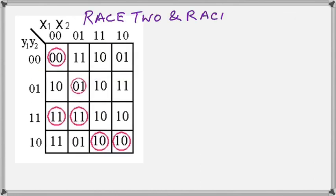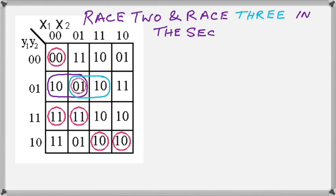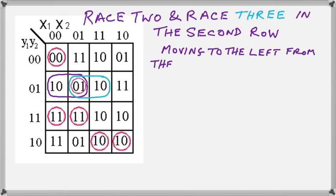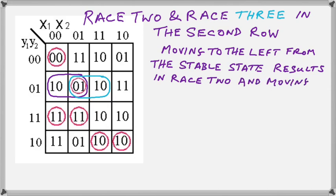Now let us look for race 2 and race 3. These occur as shown in the second row. The second row contains two races. Moving to the left from the stable state in the second row will cause a change of both of the bits inside of the square. One will be changing from a 0 to a 1, and the other will be changing from a 1 to a 0. And this will cause the race. When we move to the right, we get the same condition occurring. So whether we move to the left or the right in row 2, we will have a race.